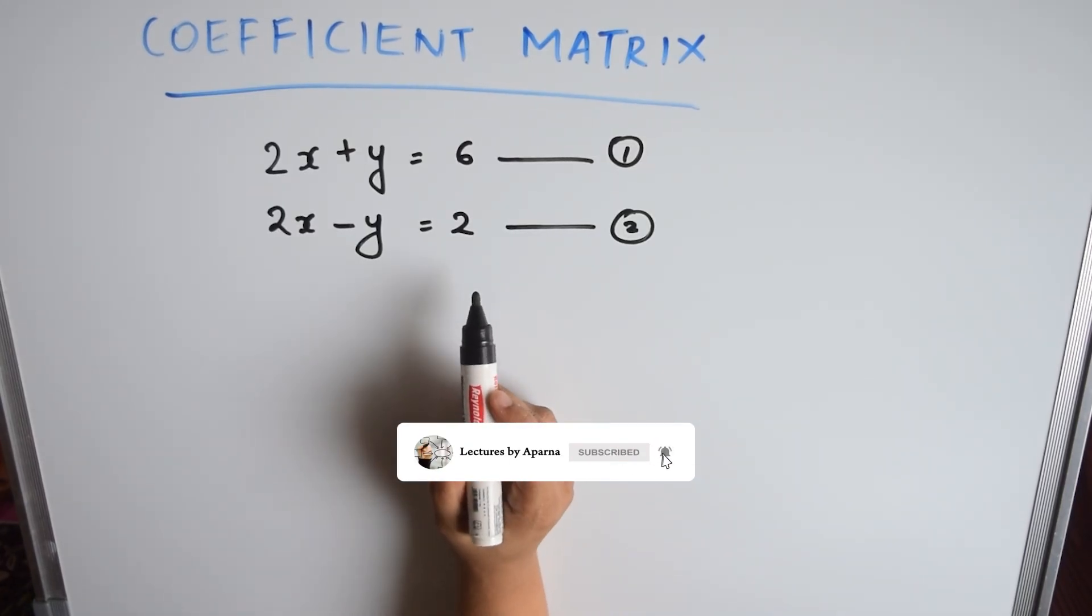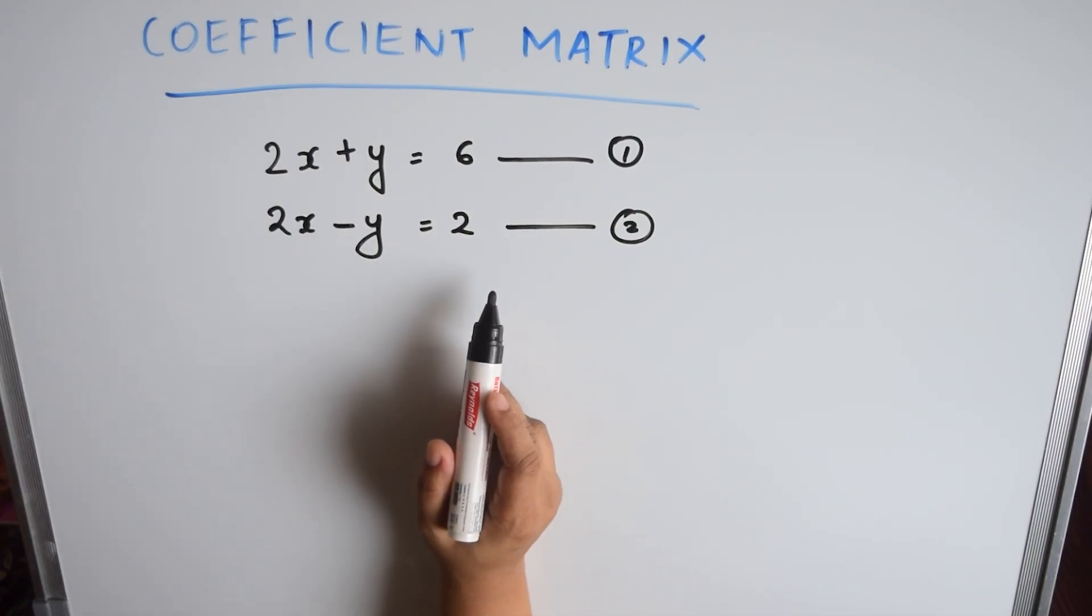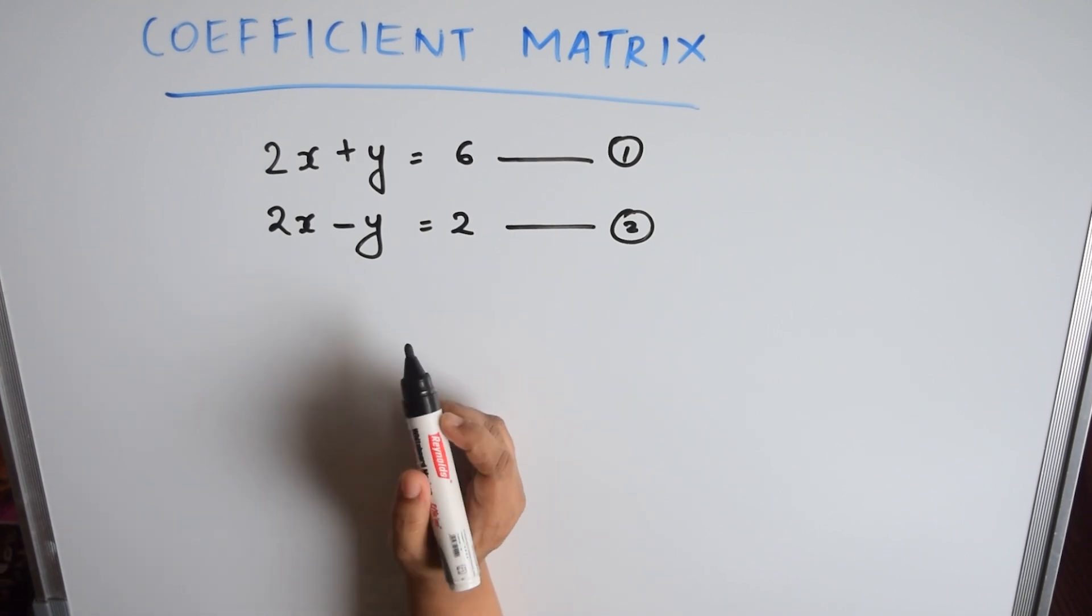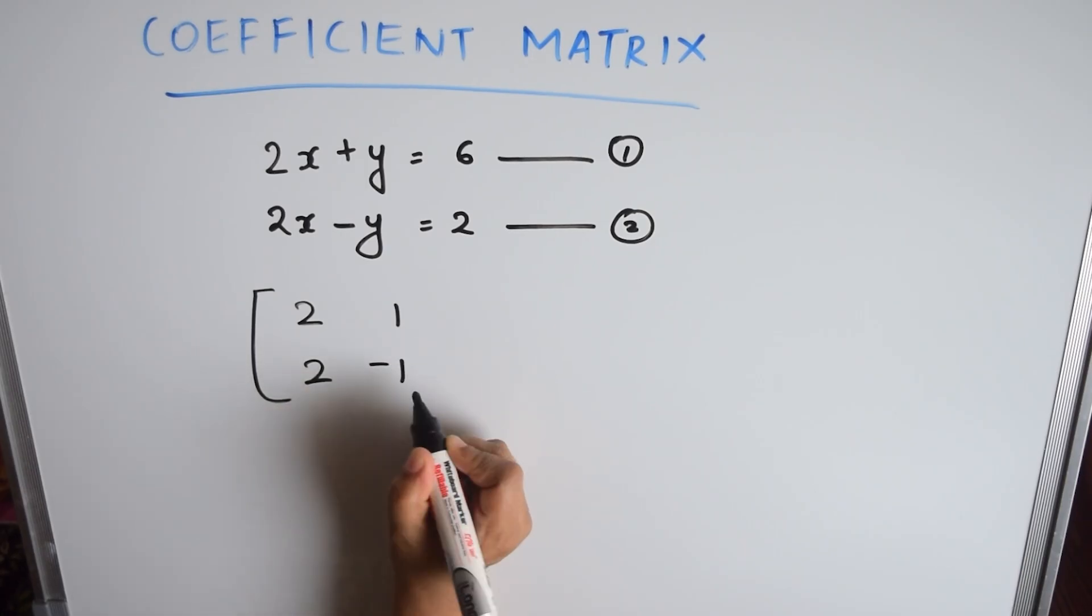Consider the set of equations 2x plus y equal to 6 and 2x minus y equal to 2. The coefficient matrix that we get from this set of equations is 2, 1, 2, minus 1.